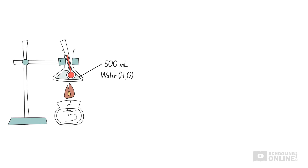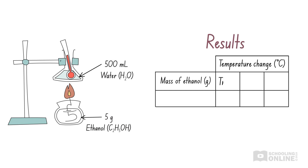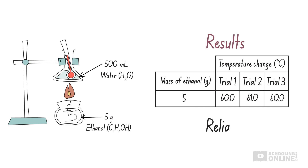Imagine you are performing an experiment to find how much heat is given off when you burn 5 grams of ethanol. On the first try, you find that the temperature of 500 millilitres of water increases by 60 degrees Celsius. You repeat the experiment twice and find that it increases by 61 degrees Celsius and then 60 degrees Celsius. This experiment has a high degree of repeatability because the results are consistent between all three repetitions. Therefore, the results of this experiment are reliable.